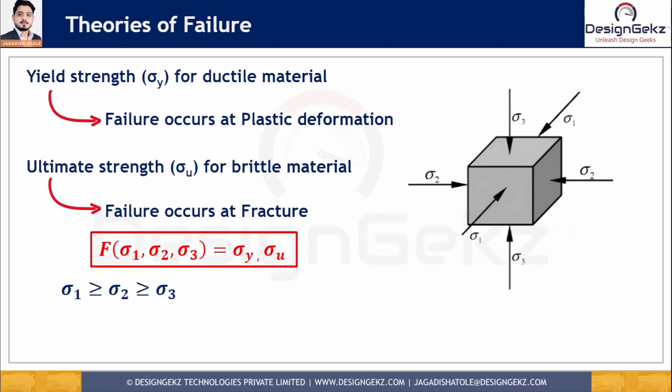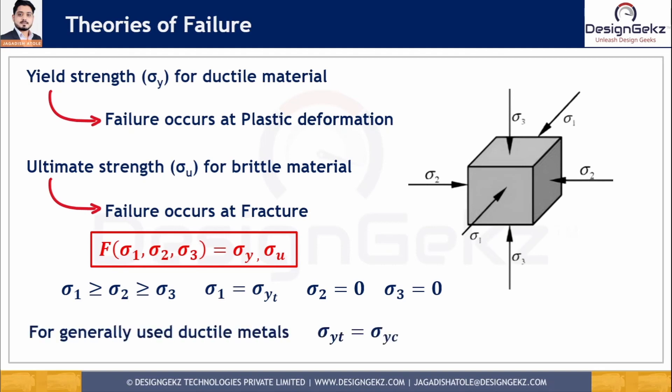By convention, principal stresses are ordered from largest to smallest: sigma 1 > sigma 2 > sigma 3. At the yield point in a tension test, the maximum principal stress equals the yield strength, while the other two are zero: sigma 1 = sigma_yt, sigma 2 = 0, sigma 3 = 0. For generally used ductile metals, the yield strength in tension equals the yield strength in compression: sigma_yt = sigma_yc.